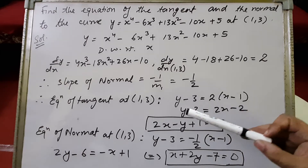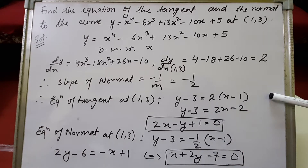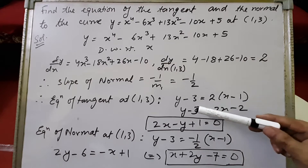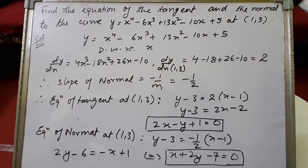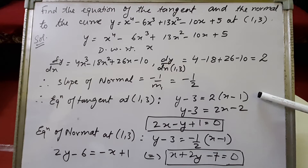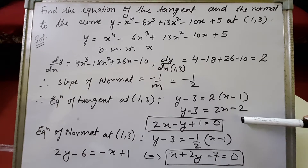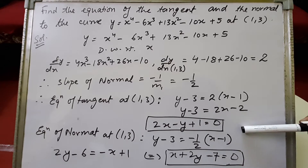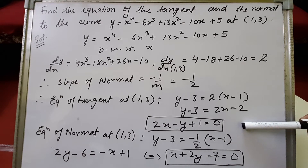For the equation of the tangent, we use the formula y minus y1 equals m1 times of x minus x1, where m1 is the slope of the tangent. Here x1 is 1 and y1 is 3. When we substitute the values, we get y minus 3 equals 2 times of (x minus 1). Multiplying out gives 2x minus 2, and rearranging gives the equation of the tangent as 2x minus y plus 1 equals 0.